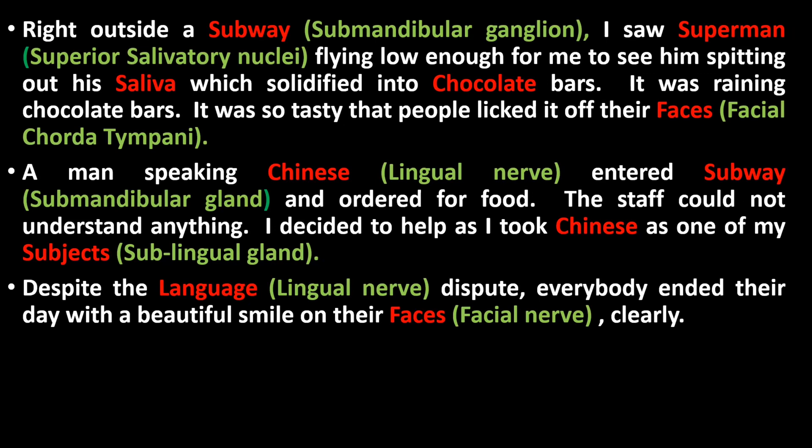Subway in the story will help us relate the story to the submandibular ganglion. Superman and saliva stand for the superior salivatory nucleus. Face and chocolate stand for facial chorda tympani. Chinese stands for the lingual nerve. Subway stands for the submandibular gland. Subject and Chinese stand for the sublingual gland.